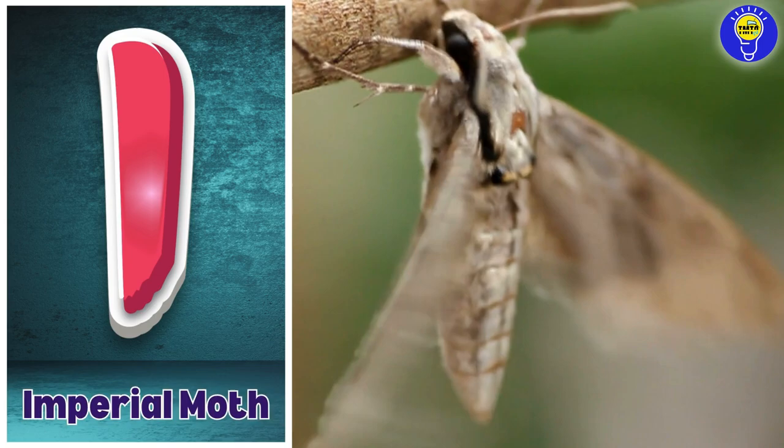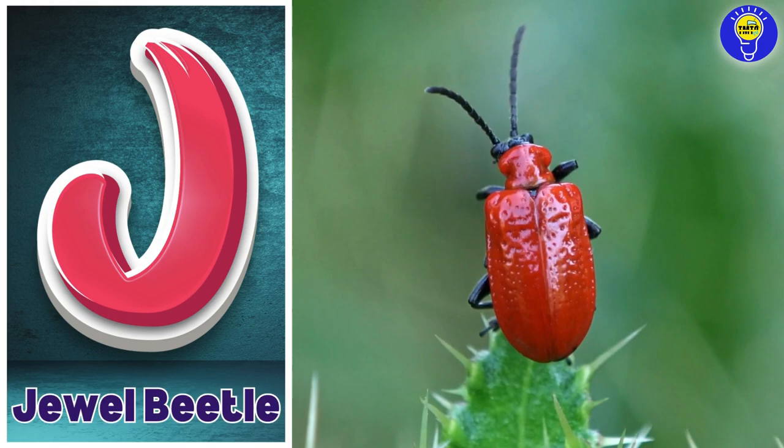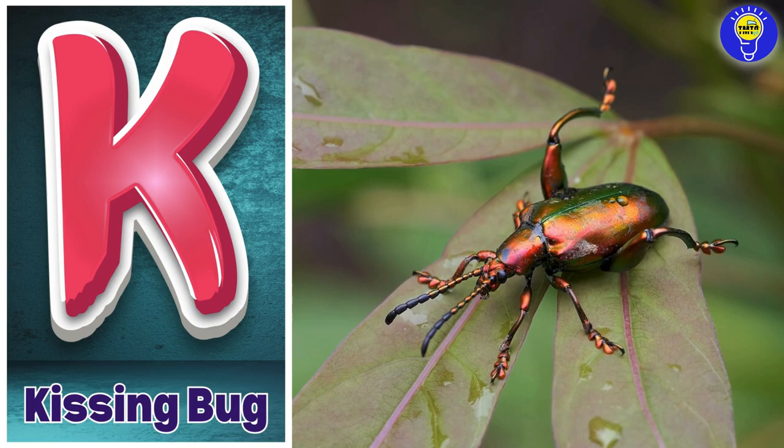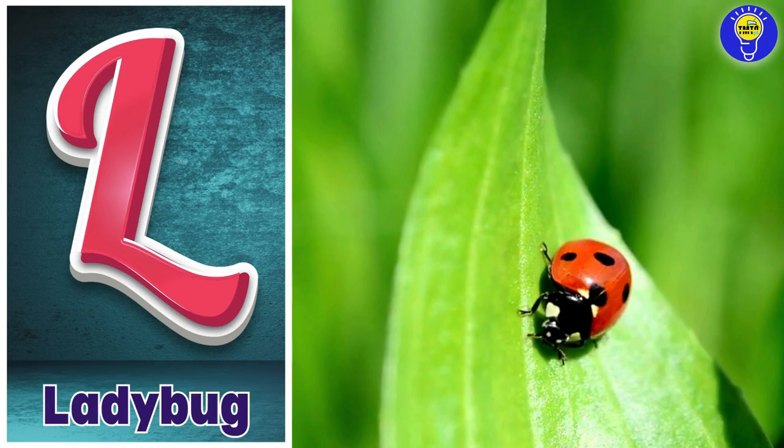J is for jewel beetle. J, j, jewel beetle. K is for kissing bug. K, k, kissing bug. L is for ladybug. L, l, ladybug.